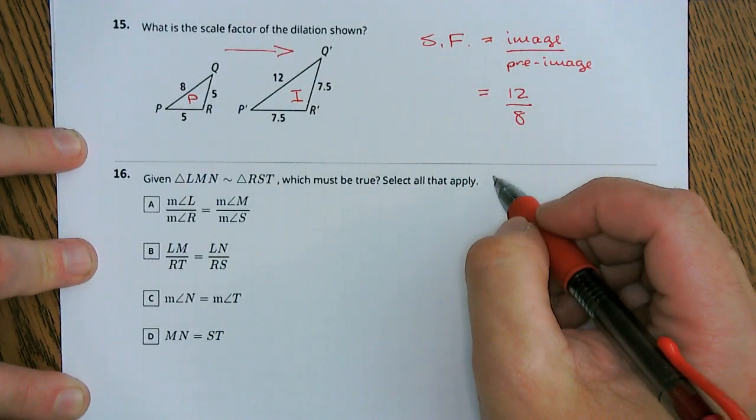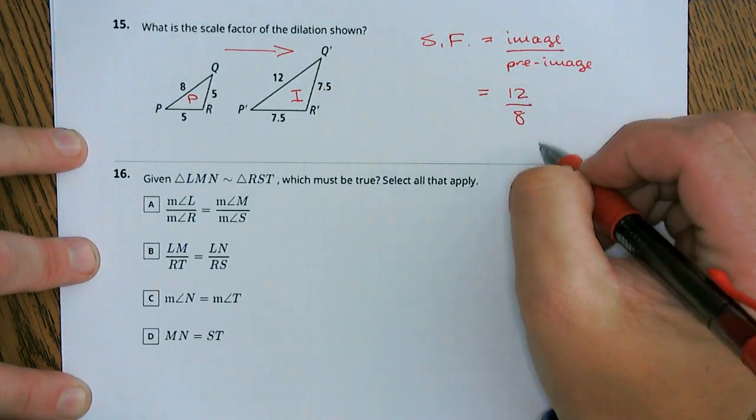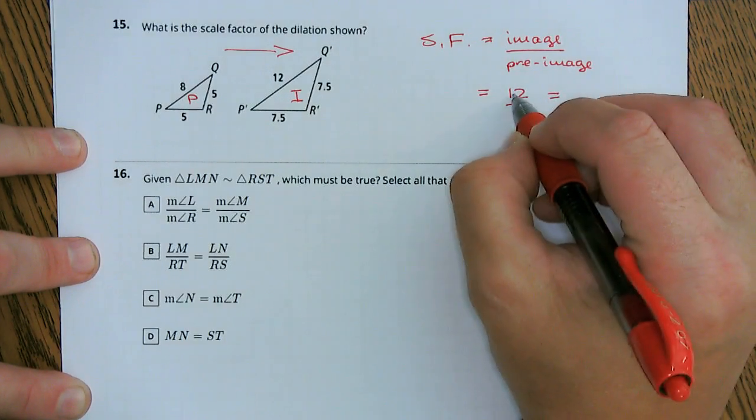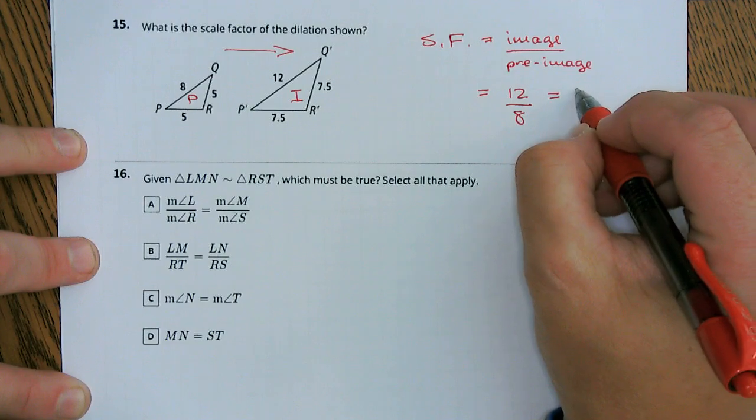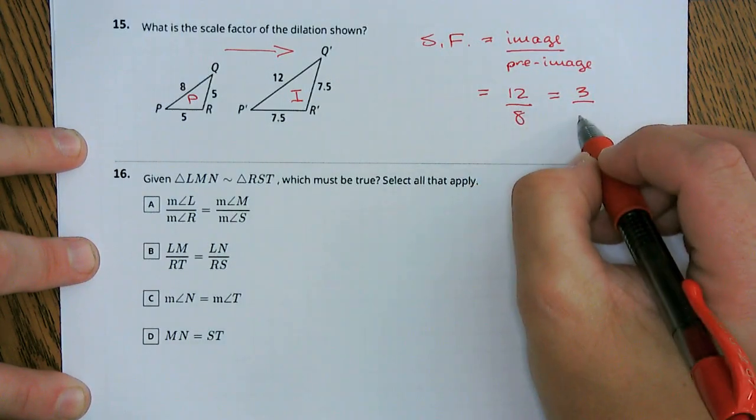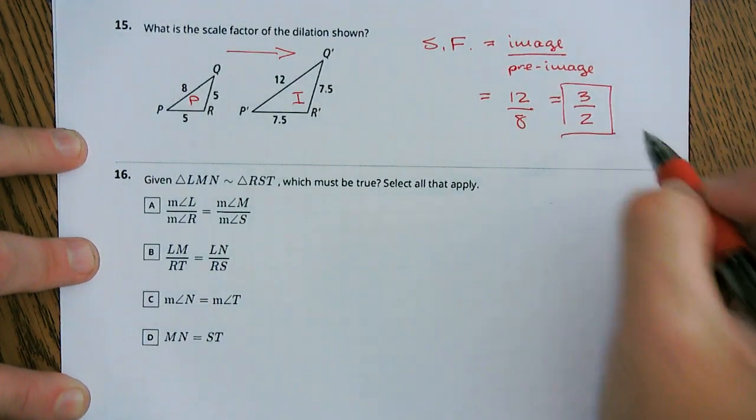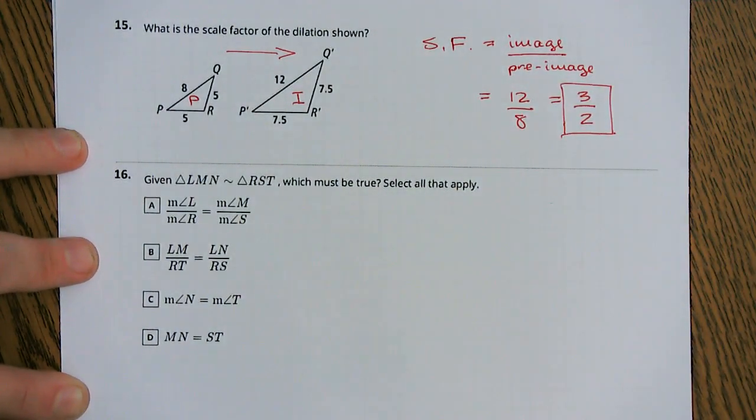Well we can simplify this fraction, both of these numbers are easily divisible by 4. So 12 divided by 4 is a 3, 8 divided by 4 is a 2. So our scale factor is 3 over 2.